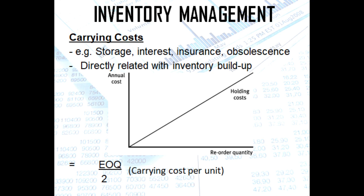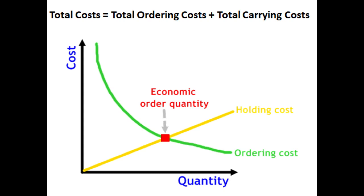How do we compute for the total carrying costs? That is EOQ divided by 2, multiplied by carrying costs per unit. Looking at the graph, ordering costs decrease as units increase while carrying costs increase as units increase. Where they intersect is your EOQ — your economic order quantity — because at that point we are minimizing the total ordering cost and the total carrying cost. That is their minimum combined amount.